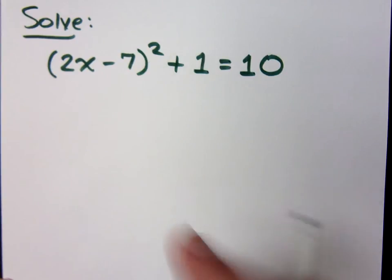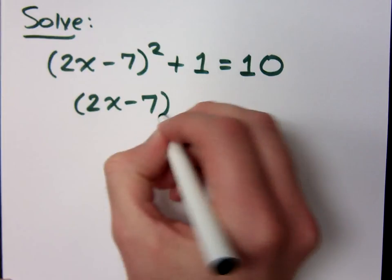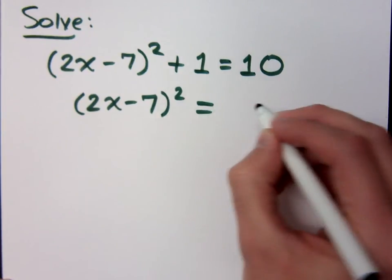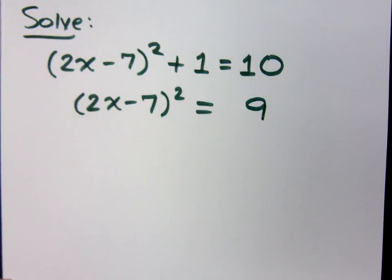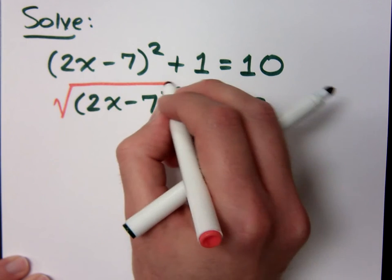Get it by itself. So 2x minus 7 squared equals what? This squares by itself. I can now do what? The square root property. There we go.